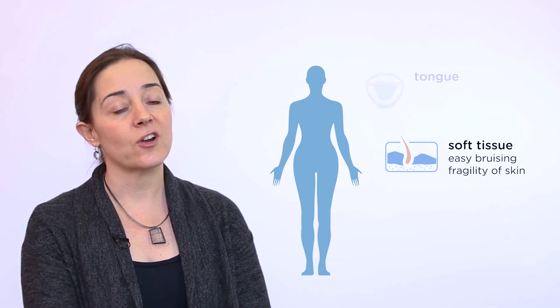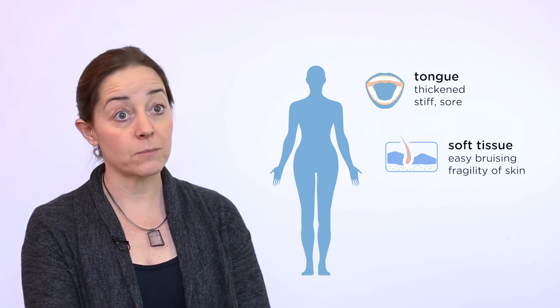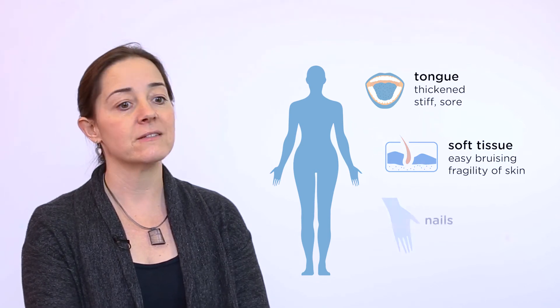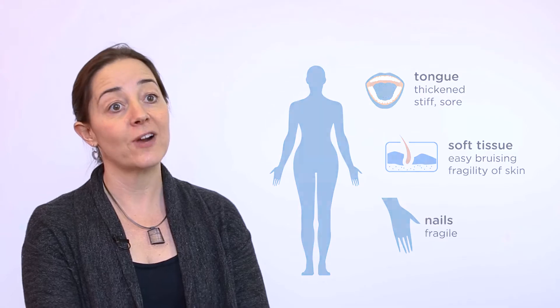It can infiltrate into the tongue, causing a thickened, stiff, sometimes sore tongue with blood blisters. It can infiltrate into the nails, making them feel fragile.